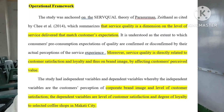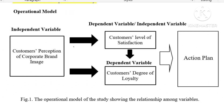Makikita nyo din — ayan na yung title natin sa bandang baba. The study had independent variables and dependent variables whereby the independent variables are the customer's perception of corporate brand image, and level of customer satisfaction. The dependent variable is the degree of loyalty to selected coffee shops in Makati City. Sa operational model natin, makikita natin dito yung independent variable: customer's perception of corporate brand image; dependent/independent variable: customer's level of satisfaction; dependent variable: customer's degree of loyalty; and then the action plan. Ayan yung Figure 1 — the operational model of the study showing the relationship among variables.